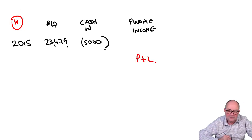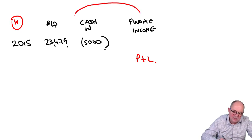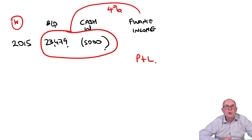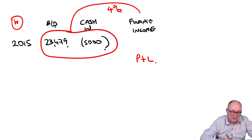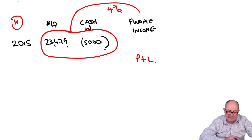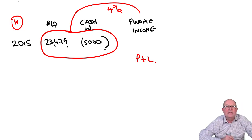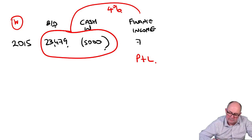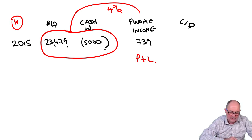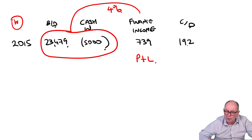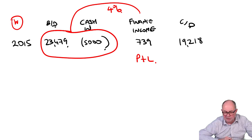That's the figure in the P&L. The interest rate is 4%, and that will accrue on the net figure. You could put a subtotal if you want, but I think you could probably see this from here. So, 23,479 less 5,000 times 4% is 739. And then the carried down at the end is 19,218. If my numbers are right, I think they are. That would be the figure that goes in the SoFP.